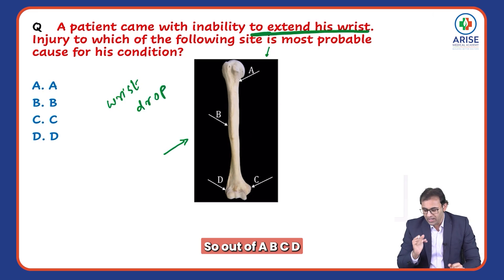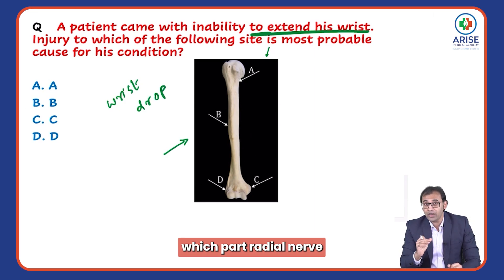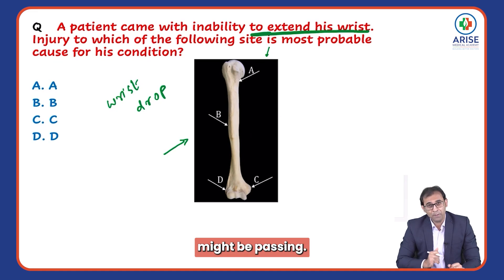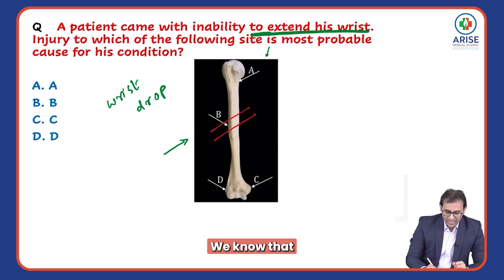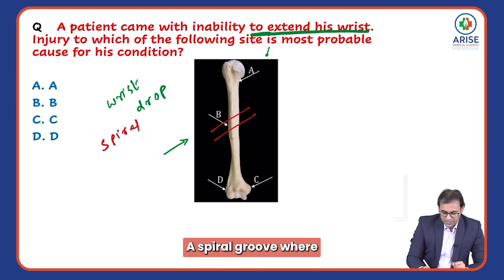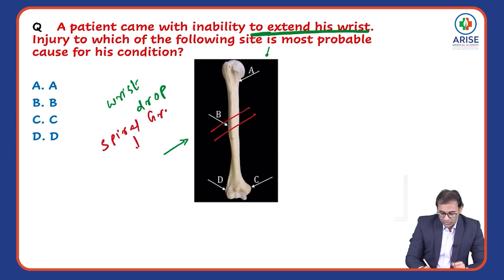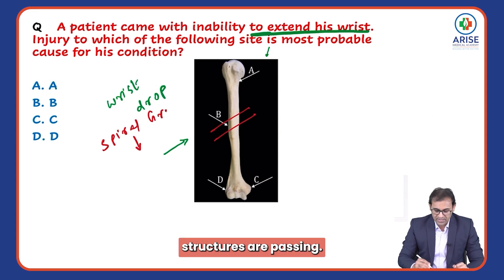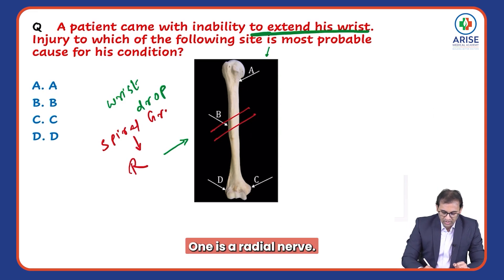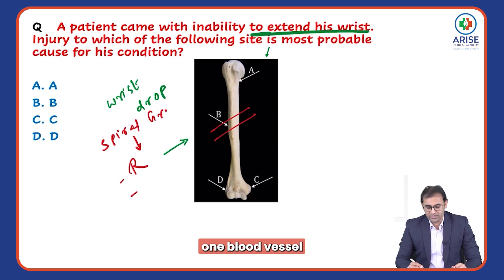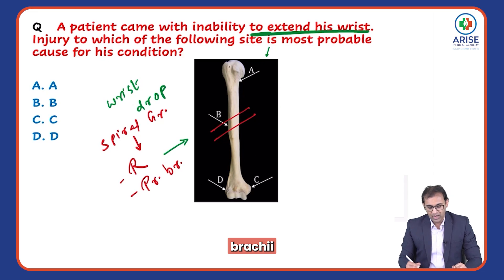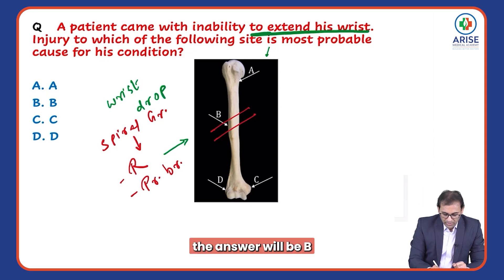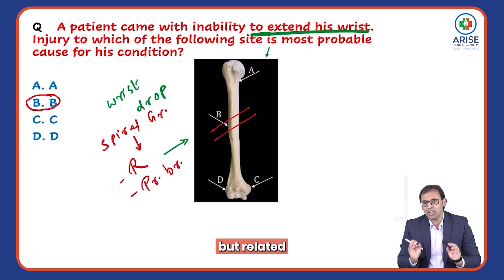Out of A, B, C, D, from which part is the radial nerve passing? From the spiral groove — here in the center you can see the spiral groove, where two important structures are passing: one is the radial nerve, and another is a blood vessel called the profunda brachii. So the answer will be B.